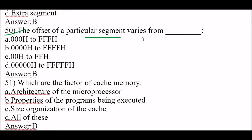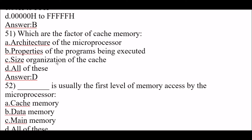Next question: the offset of a particular segment varies from 4 times 0H to 4 times FFFFH — option B is correct. Next question: which are the factors of cache memory? Architecture of the microprocessor, properties of the programs being executed, and size and organization of the cache — all of these are factors. Option D, all of these.